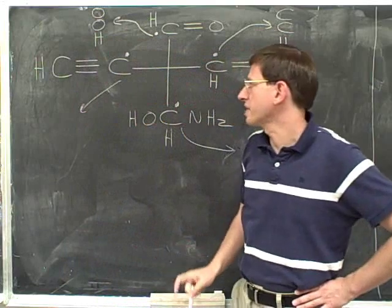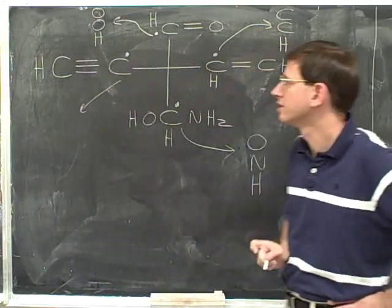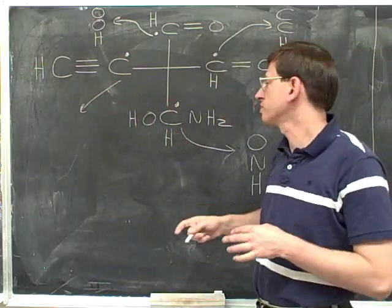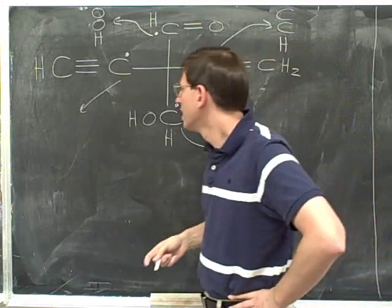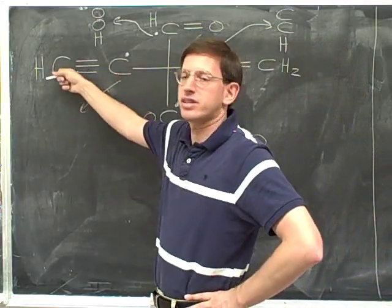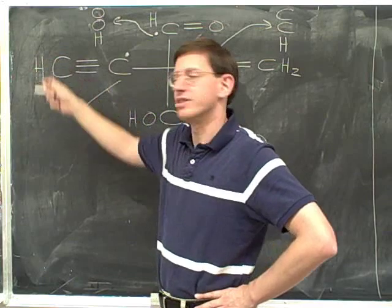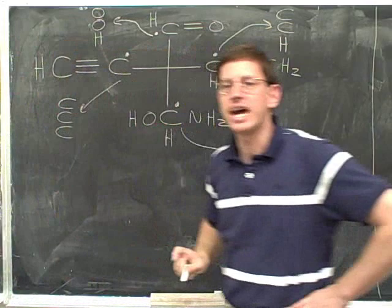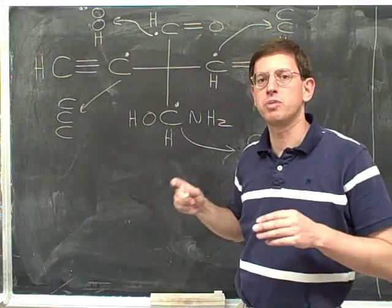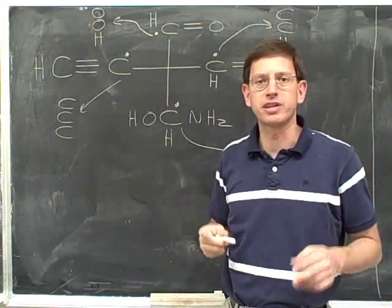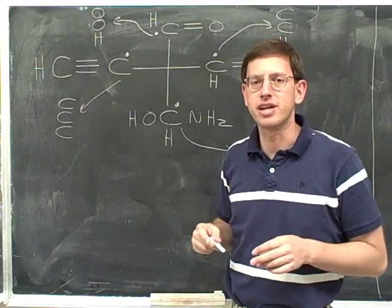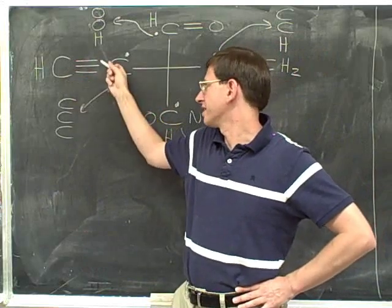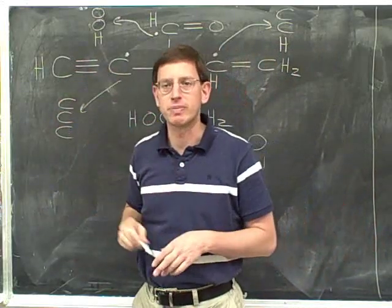Now let's try listing three atoms for the carbon on the left. Here we have a triple bond, but you may have figured out how to deal with it now that you've seen how we dealt with a double bond. Since this is a triple bond into the carbon, we're simply going to treat that as three separate bonds to carbon. The list is carbon, carbon, carbon. By treating this triple bond as three separate bonds, we're able to pretend this is bonded to three separate carbons, and that allows us to keep up our pattern.